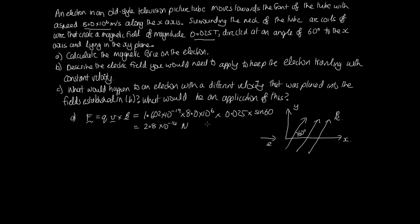We've got the magnitude, but we also need to consider the direction using the right-hand rule. Align your fingers with the magnetic field and point your thumb to the right. Your palm comes out of the screen towards you. However, this is an electron with negative charge, so the force on the electron is out the back of your hand — that's into the screen, in the negative z direction.